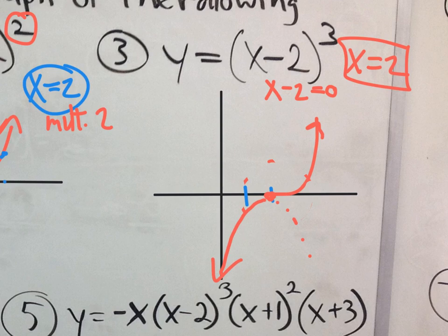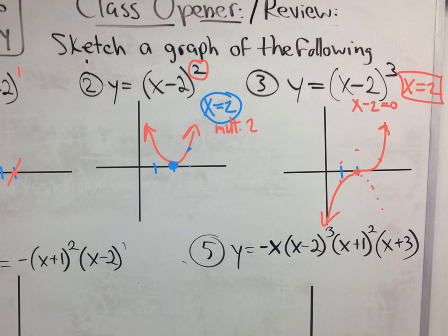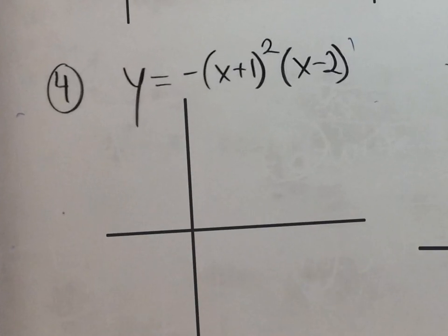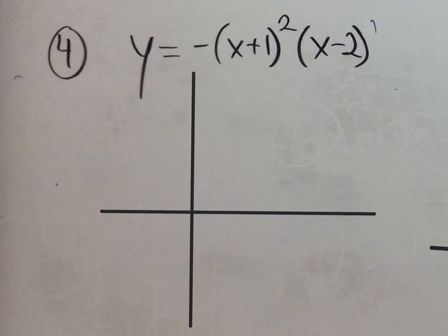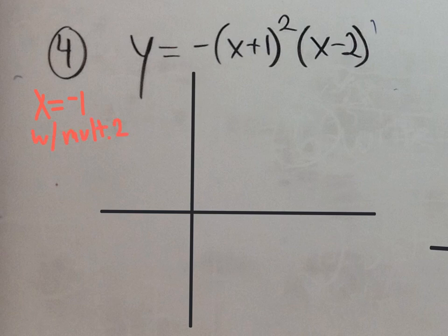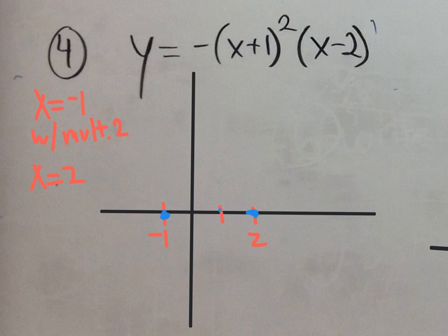Those were very simple situations — none of those will come out on the test alone. But they will come out combined together, like we see on number 4. On number 4, the first thing to do is identify your answers. One answer is x equals negative one, with multiplicity 2. The other answer is x equals 2, with multiplicity 1. Let's go to the graph and put those two solutions there: negative one and positive two, with dots at each location.